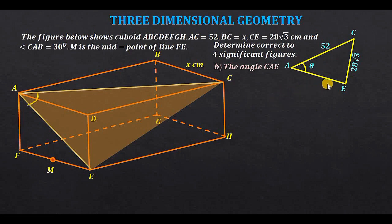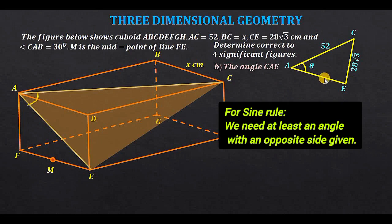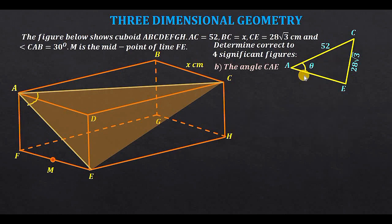We can think of sine rule or cosine rule. For sine rule we need at least one angle with its opposite side, but we do not know any angles — we are given only two sides. That is why we resort to cosine rule, which requires the values of all three sides.